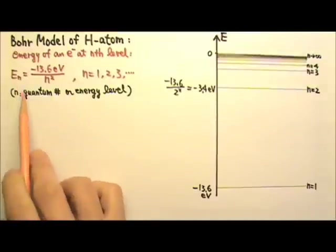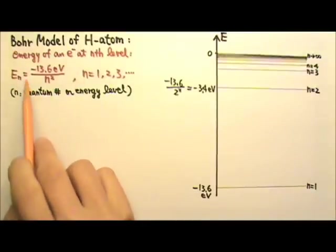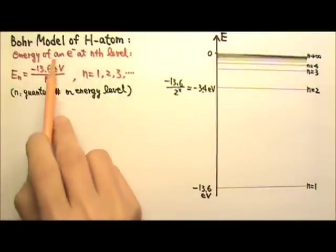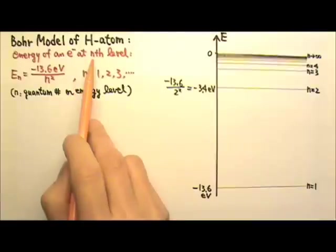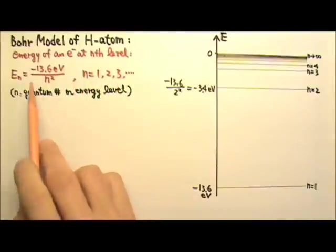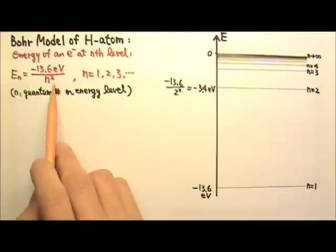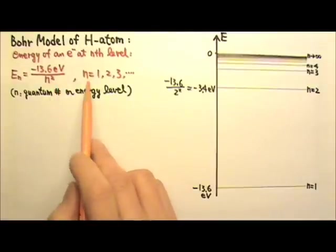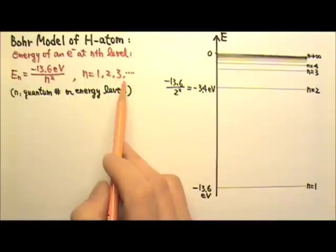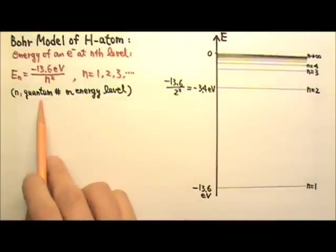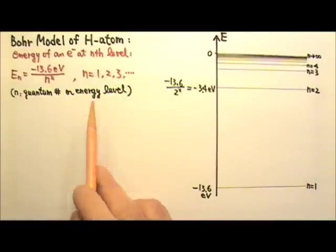I'm not going to derive it here, but this is the equation for the energy of an electron at the Nth level in a hydrogen atom. EN equals negative 13.6 eV divided by N squared. And N is 1, 2, 3, that kind of whole number. N is the quantum number or energy level.